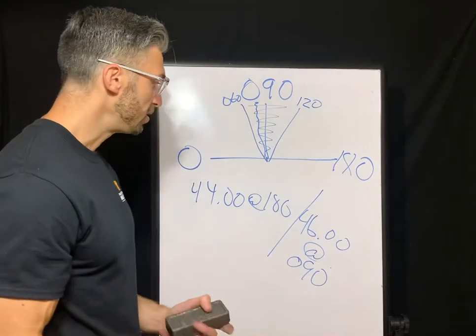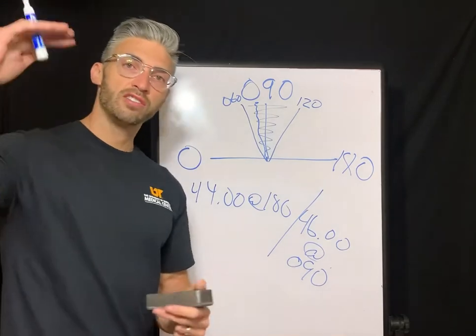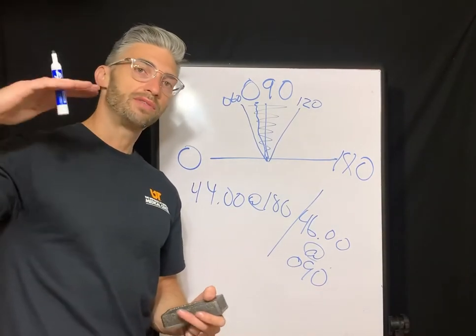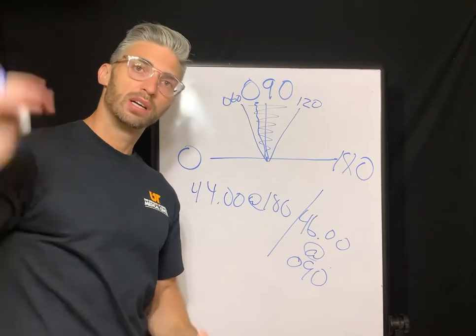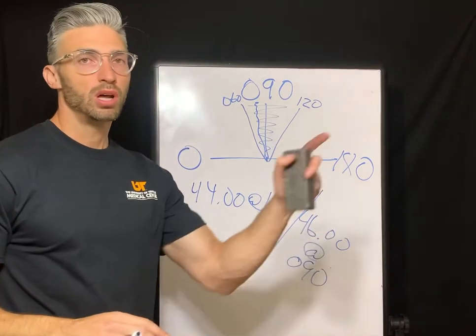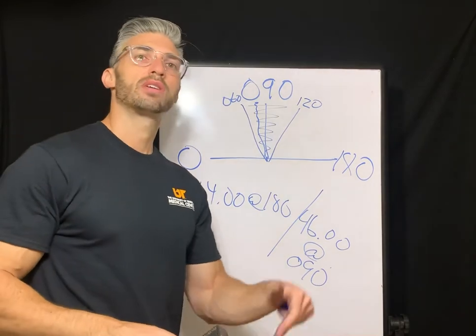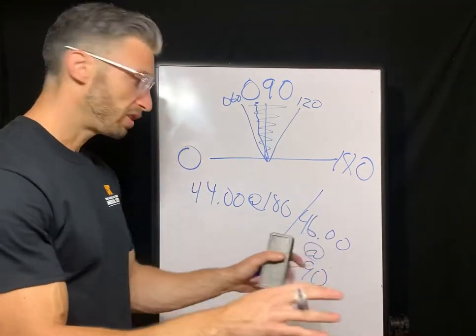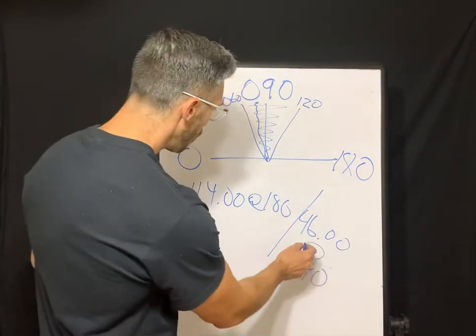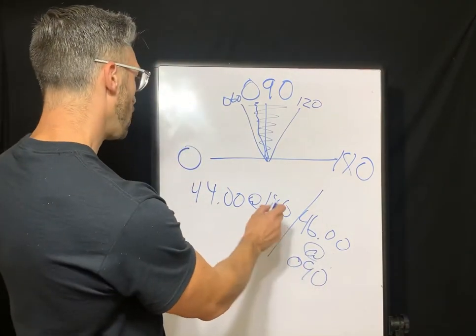So let's say we want to do 44 at 180, 46 at 90. Well, first off, we notice there are two diopters of corneal astigmatism. 44 to 46 is the difference in the corneal curvature. And from here, you're just looking at the K values.